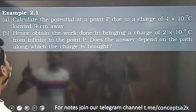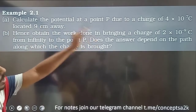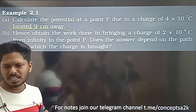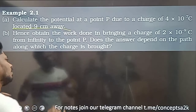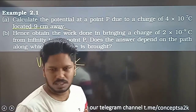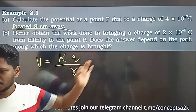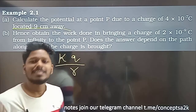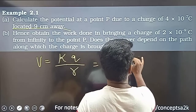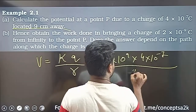Question number one: calculate the potential at a point P due to a charge 4 into 10 power minus 7. Apply the basic potential formula V = KQ/R. One important thing: if the charge is positive or negative, substitute it as a scalar quantity. K value times charge divided by distance.